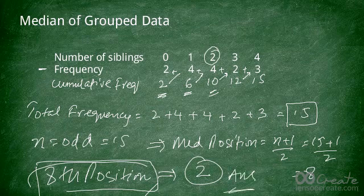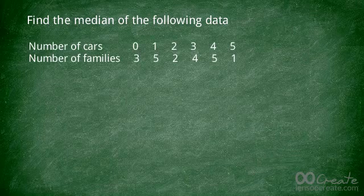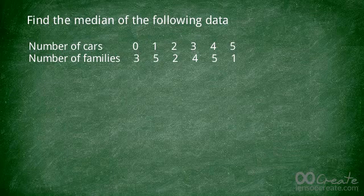So the median is 2. Now try the following question: you survey people in your neighborhood and ask how many cars they have. Families may have 0, 1, 2, 3, 4, or 5 cars. Find the median number of cars. Press pause and try it yourself, then press play to see the solution.